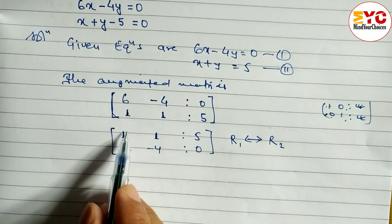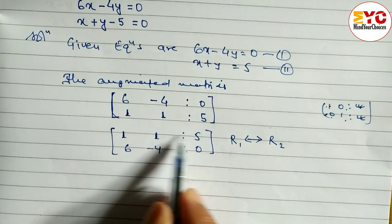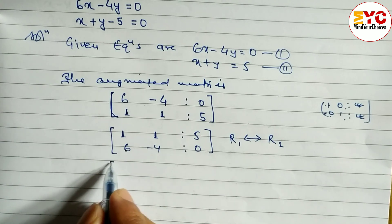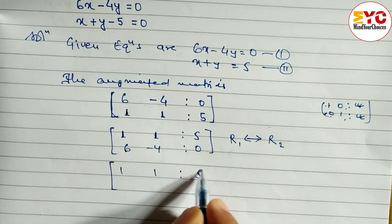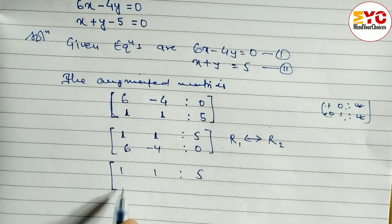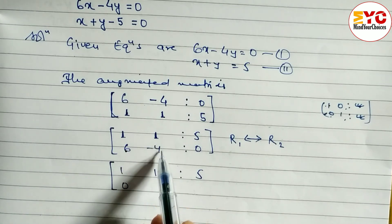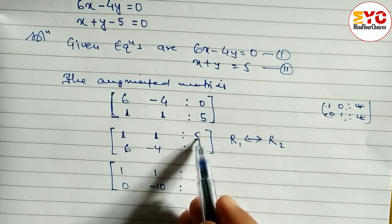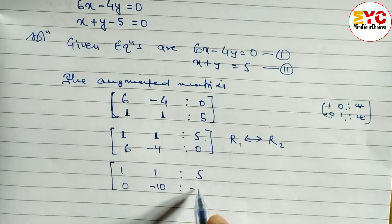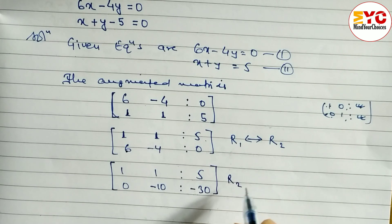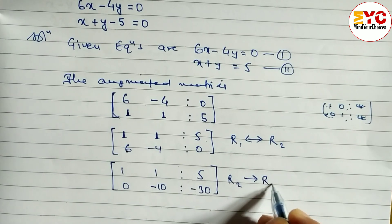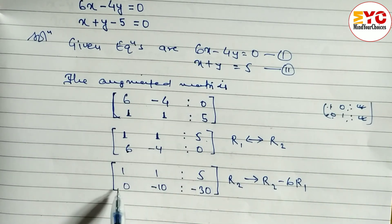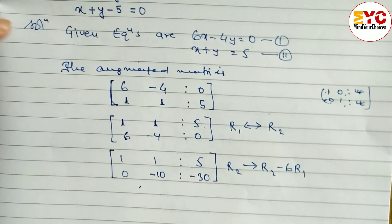Now we need to convert the 6 in row two to zero. We apply R2 = R2 minus 6·R1. Multiplying row one by 6: 6×1=6, subtract to get 0; 6×1=6, and minus 4 minus 6 gives minus 10; 6×5=30, and 0 minus 30 gives minus 30. So row two becomes [0, minus 10, minus 30].